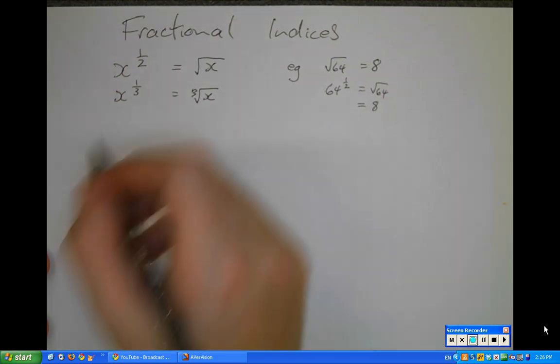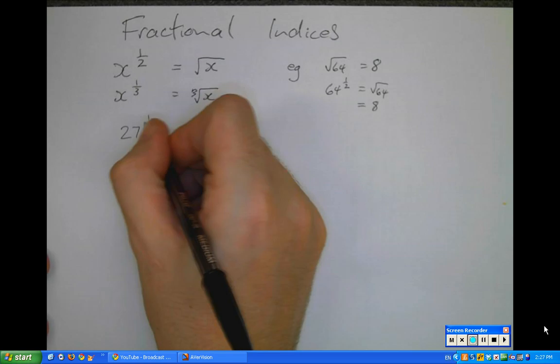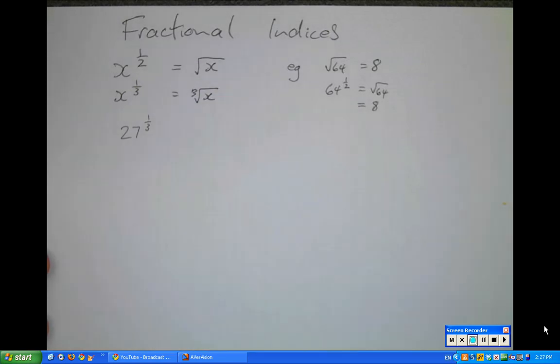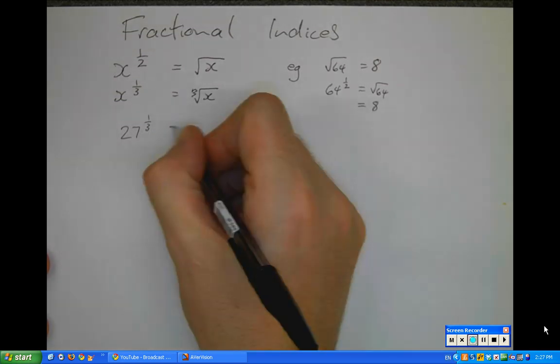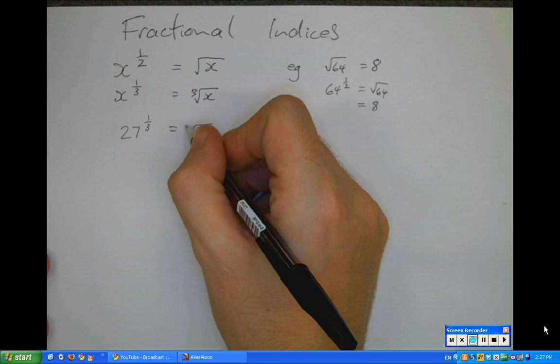So if I had 27 to the power of one third, I'm looking for the number that multiplied by itself and then multiplied by itself again gives me 27. That is, I'm looking for the cube root of 27.